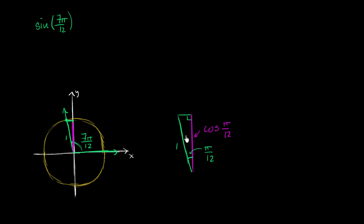Instead of thinking about it this way, let's see if we can decompose this angle into angles for which we do know the sine and cosine — the angles in special right triangles. For example, we are very familiar with 30-60-90 triangles.